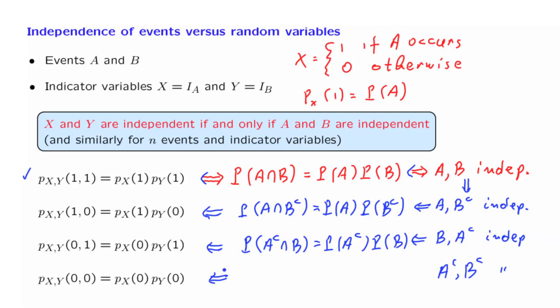And by following the same line of reasoning, this implies the fourth relation as well. So we have verified that if events A and B are independent, then we can argue that all of these four equations will be true, and therefore random variables X and Y will also be independent.